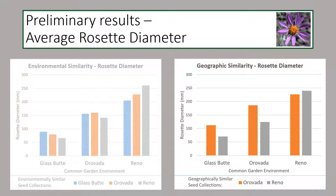My other question is whether plants that come from a seed collection location geographically close to a particular garden would perform better in that garden. In the figure on the right, the orange bars represent plants from a seed collection site close to Orivada, and the gray bars represent plants from a site close to Reno. This graph shows that plants from a seed collection site close to a particular garden had a larger rosette diameter in that garden, perhaps indicating higher performance. It's information like this that we will be putting into our models to help create seed transfer guidance for land managers.